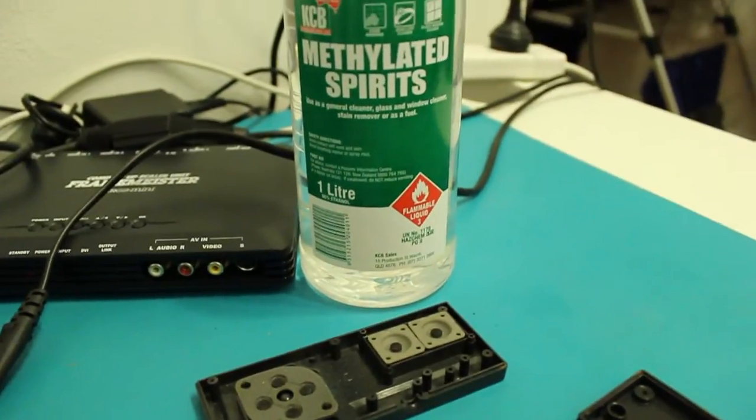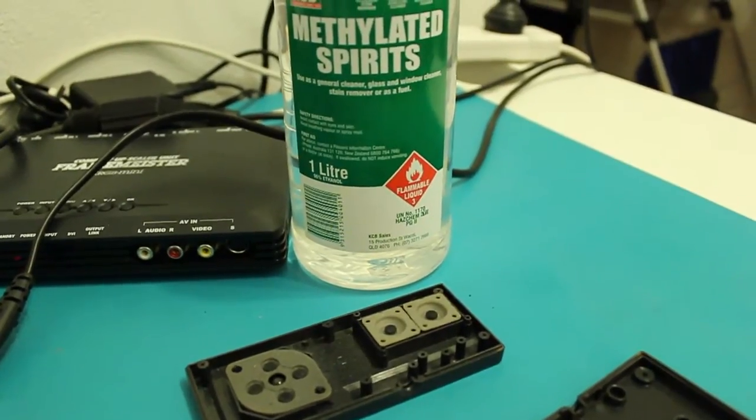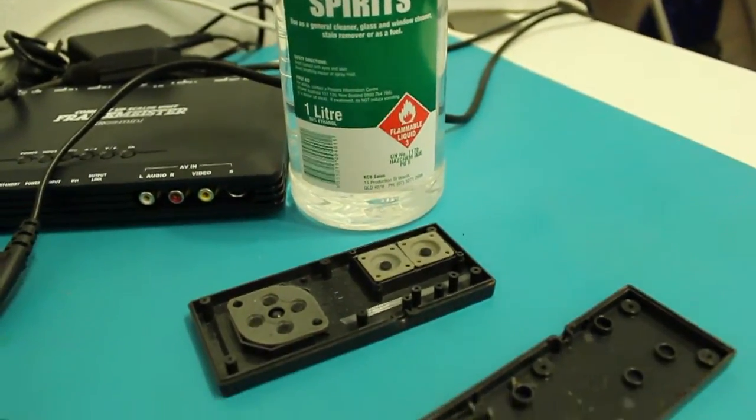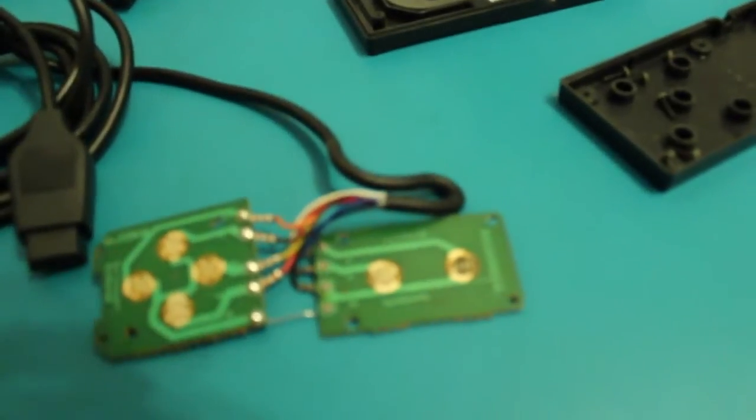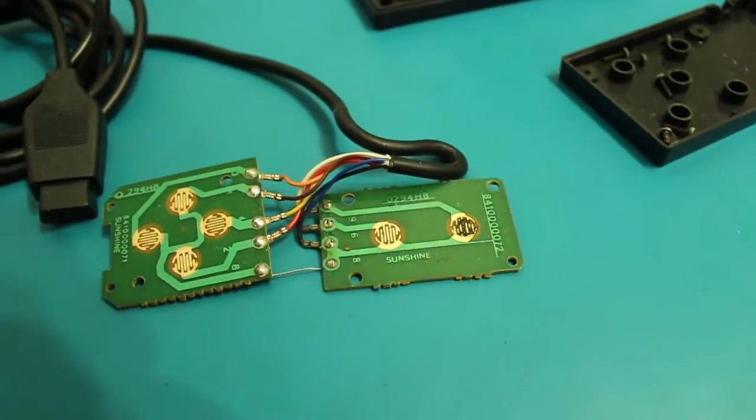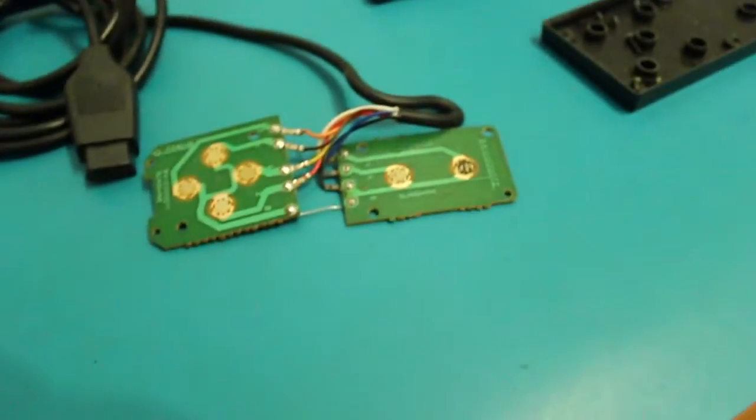I think in the States the methylated spirits is a different color and it's got some methanol perhaps. That is very bad for doing things like this. So don't use that if you're in the States. Use isopropyl. Probably should use isopropyl, but methylated spirits is like $4 a bottle. So, why not?